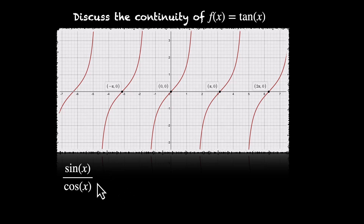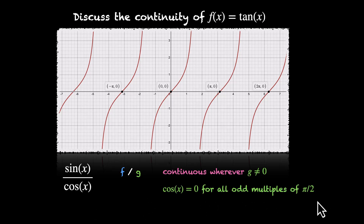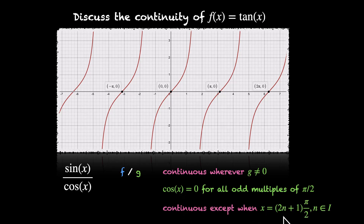Since f/g is continuous wherever g ≠ 0, tan(x) is continuous wherever the denominator cos(x) is not zero. Now cos(x) is zero for all odd multiples of π/2: cos(π/2) = 0, cos(3π/2) = 0, cos(−π/2) = 0. That's why we get those breaks. So tan(x) is continuous except when x = (2n + 1)·π/2, where n belongs to the set of integers — since 2n + 1 is always odd.